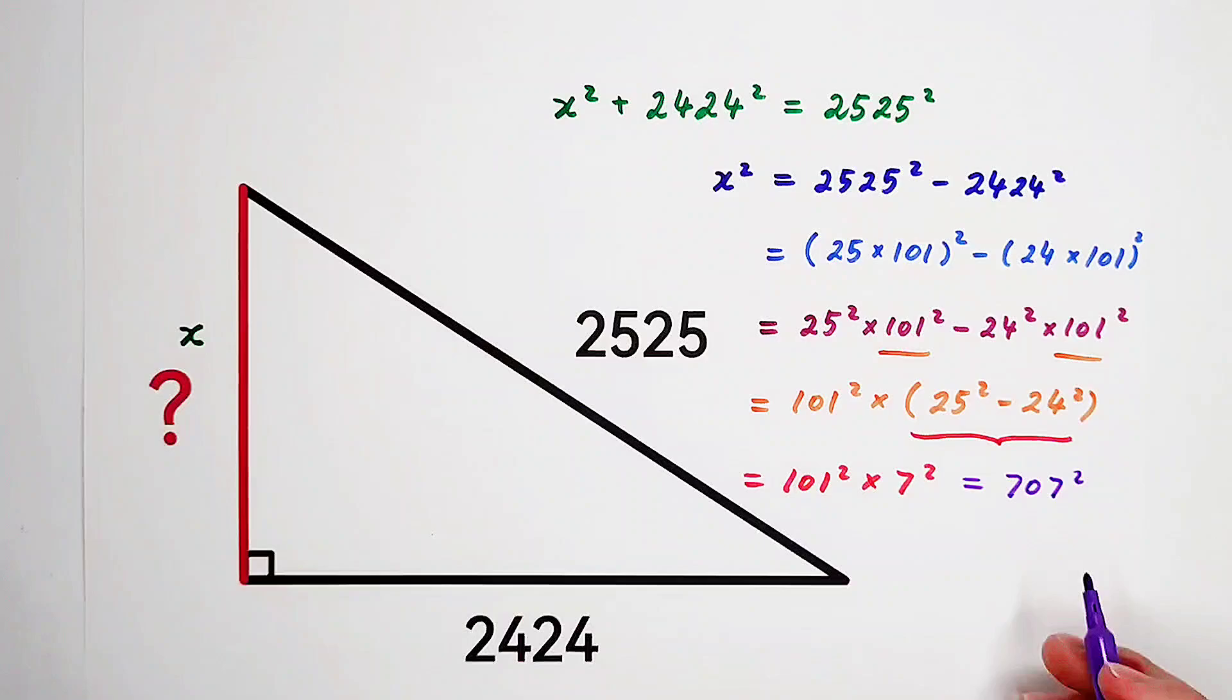So x squared equals 707 squared. Since x is a length, it can't be negative. So that means x equals 707.